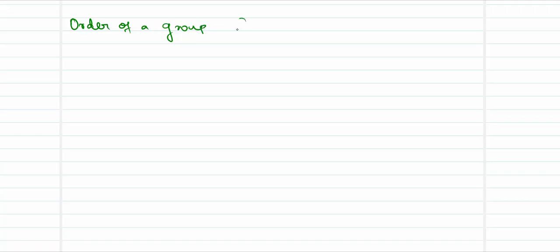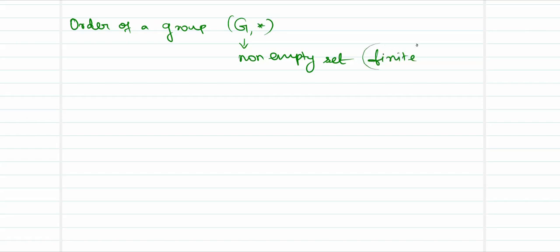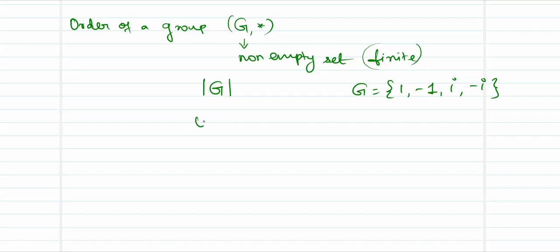What do we mean by order of a group? If you have a group G with a binary operation star defined on it, and G is a non-empty finite set, then the order of the group is nothing but the cardinality of G. So if G is defined as {1, -1, i, -i}, then the order of G will be equal to 4.